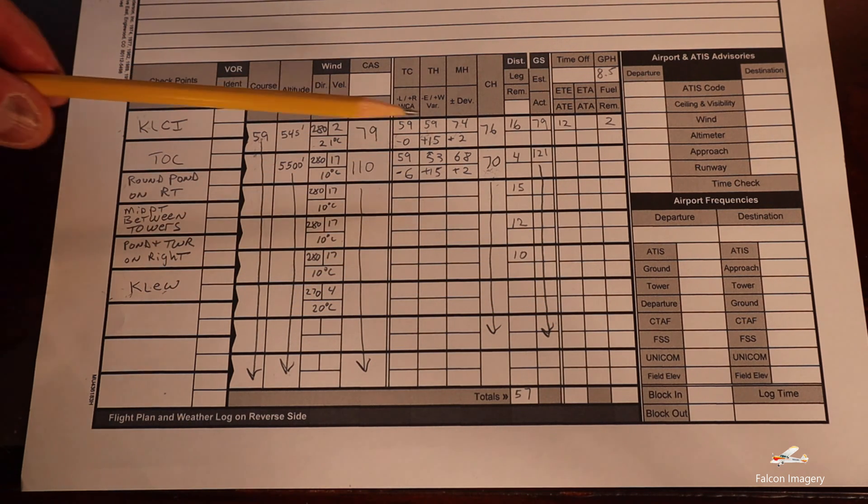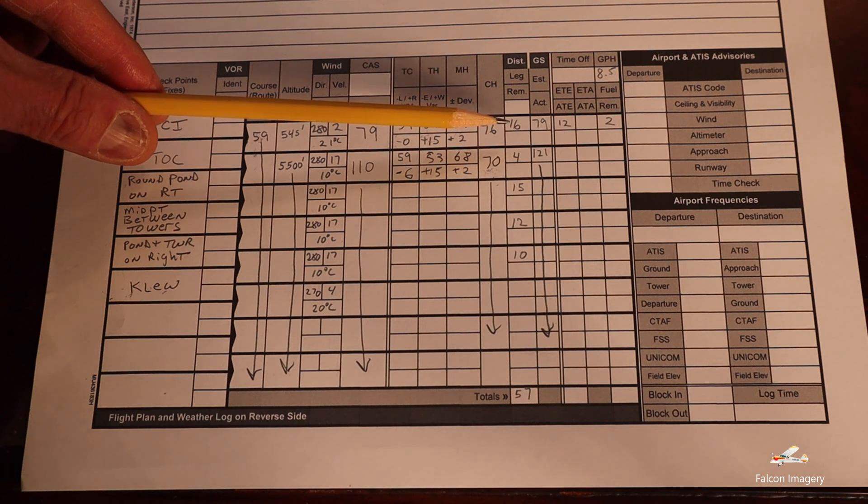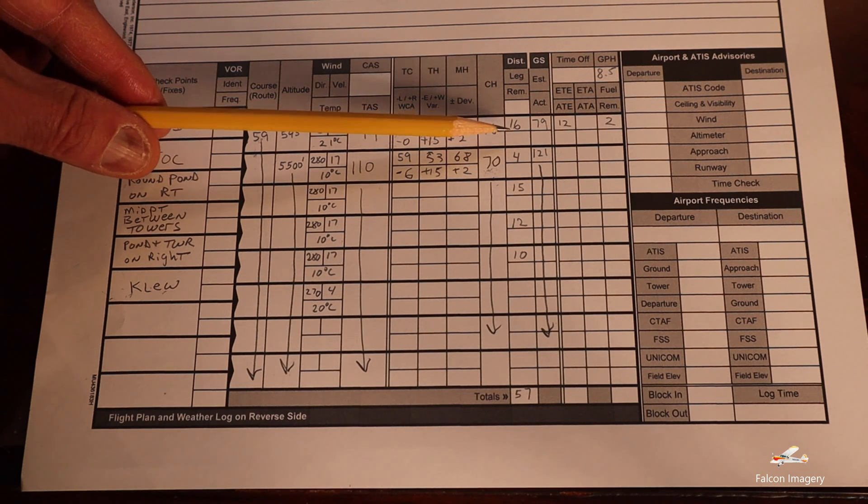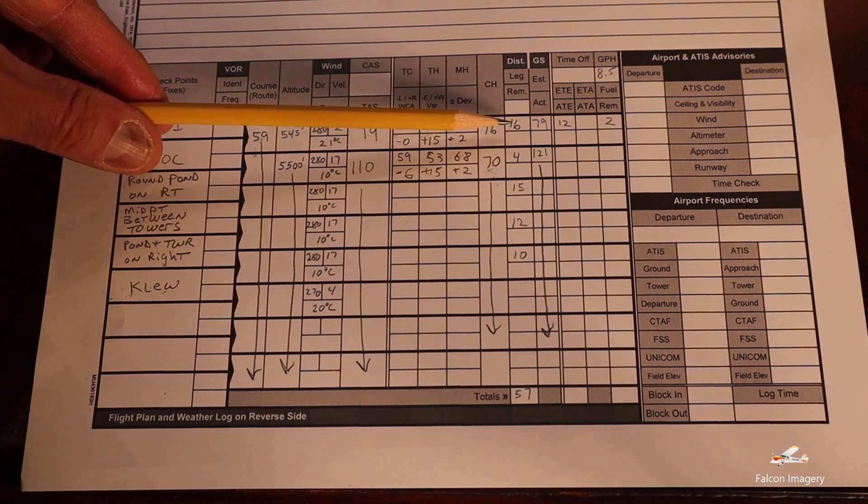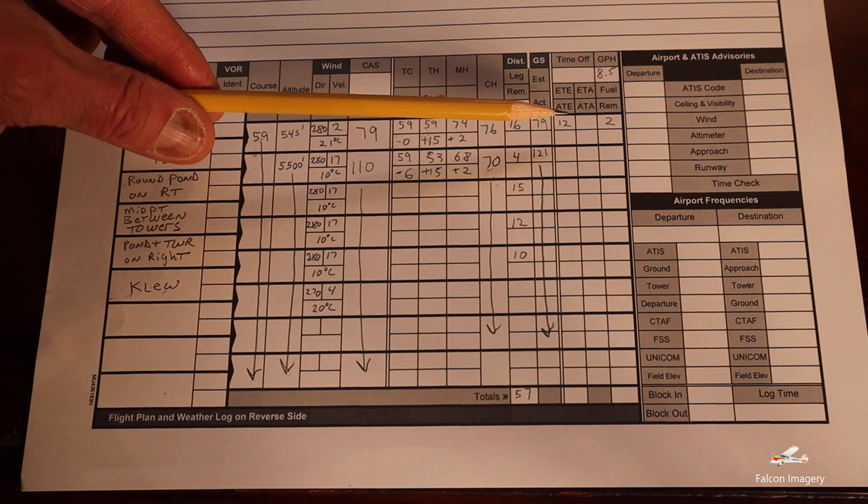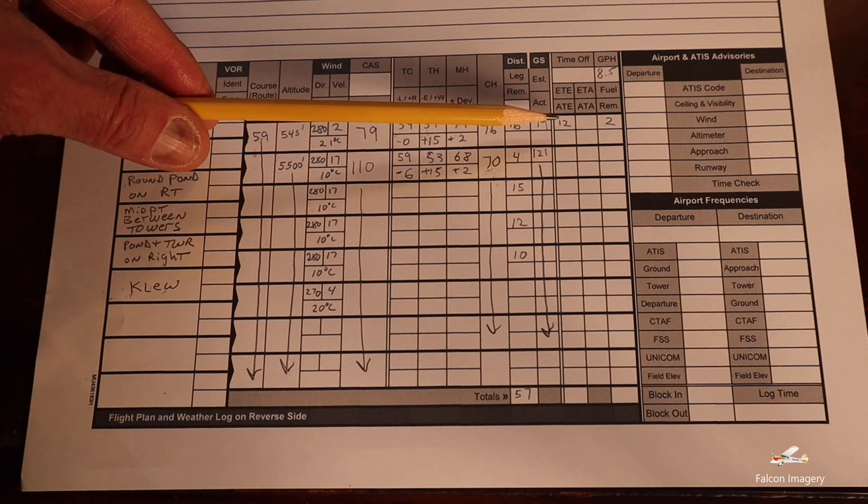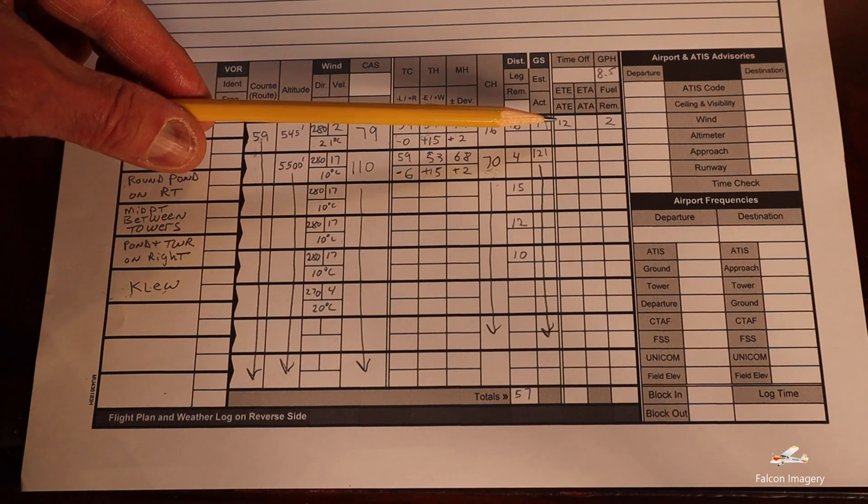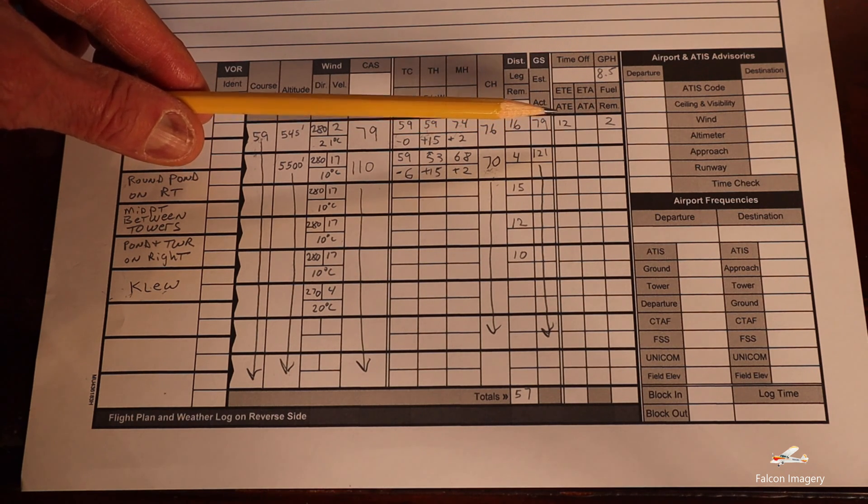Between Laconia and top of climb, we've already determined by looking at the POH that it's going to be about a 16 mile distance to travel to the top of climb, and it's going to take us 12 minutes by looking at the performance charts for a climb in the Pilot Operating Handbook for the Piper Warrior that we're flying.